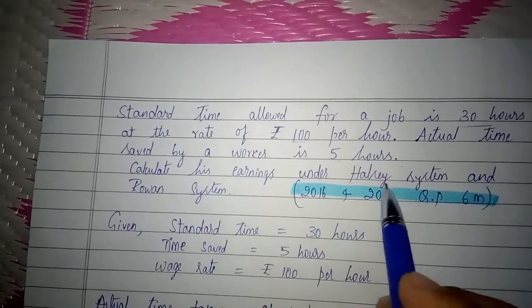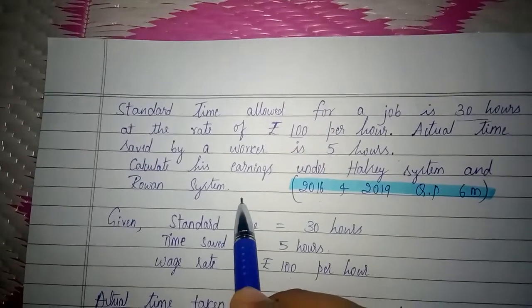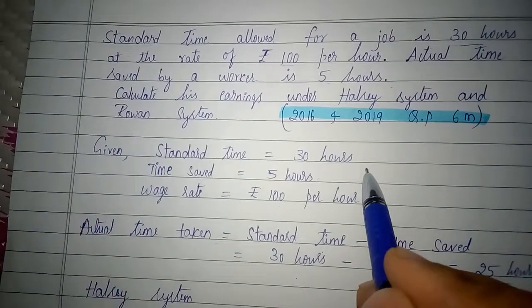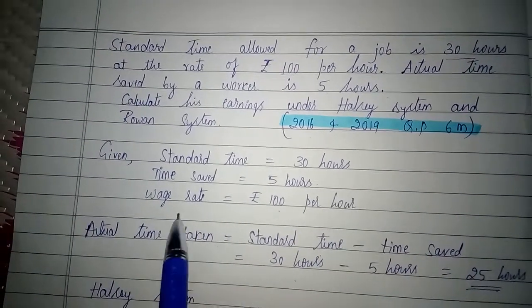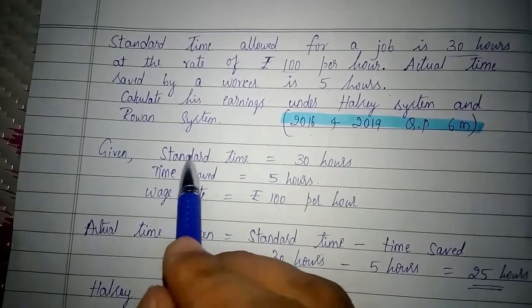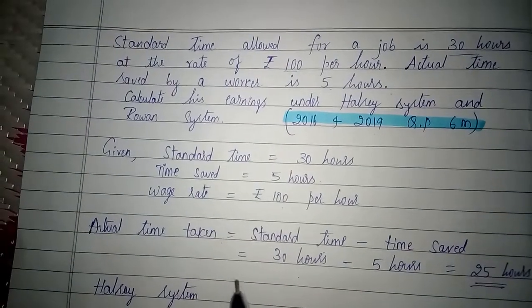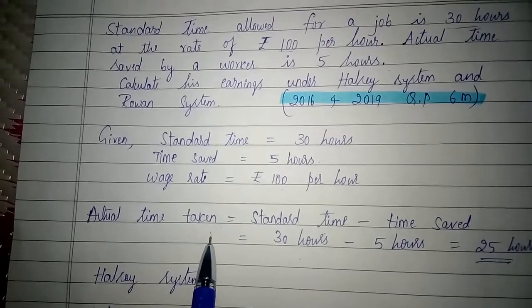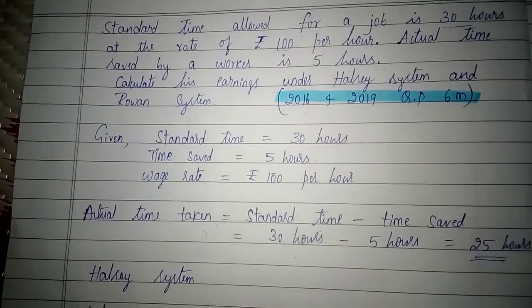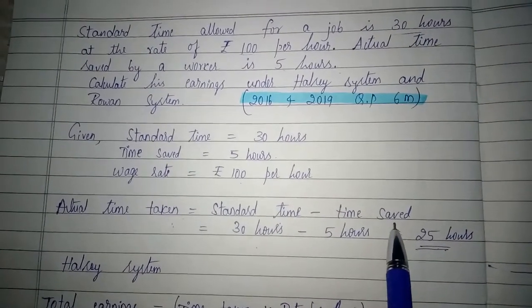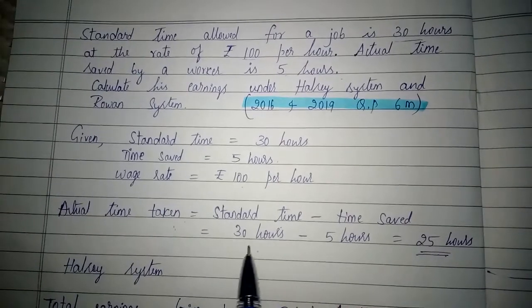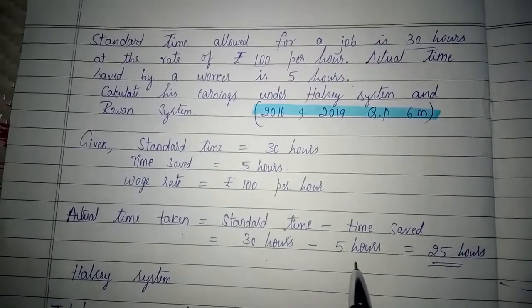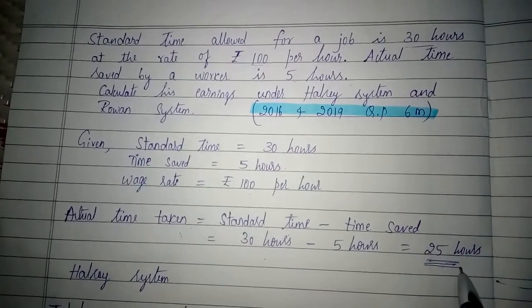As per this problem, the given information is: standard time = 30 hours, time saved = 5 hours, and wage rate = rupees 100 per hour. First, we need to determine the actual time taken by the worker to complete the task. That can be calculated by deducting time saved from the standard time. So standard time 30 hours minus time saved 5 hours gives us 25 hours — this is the actual time taken by the worker.